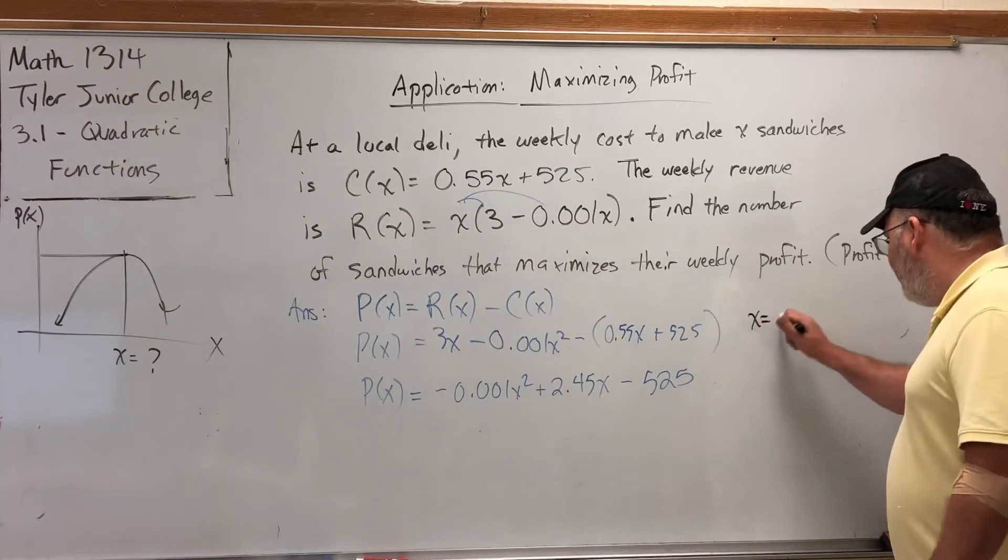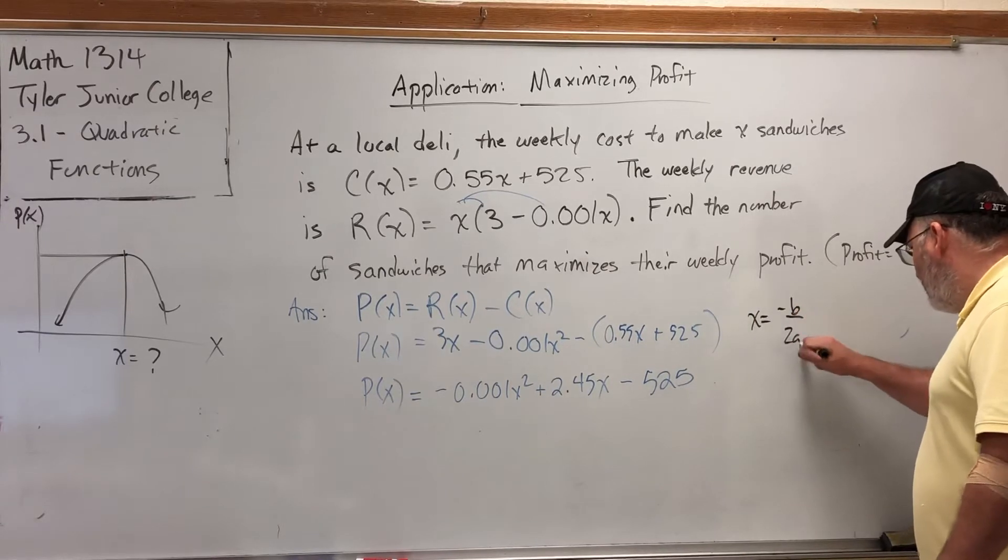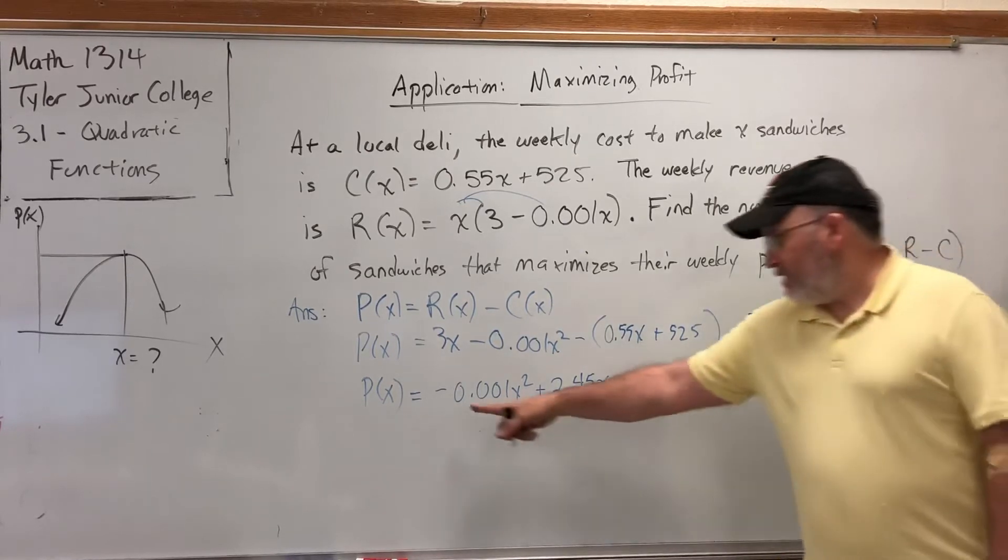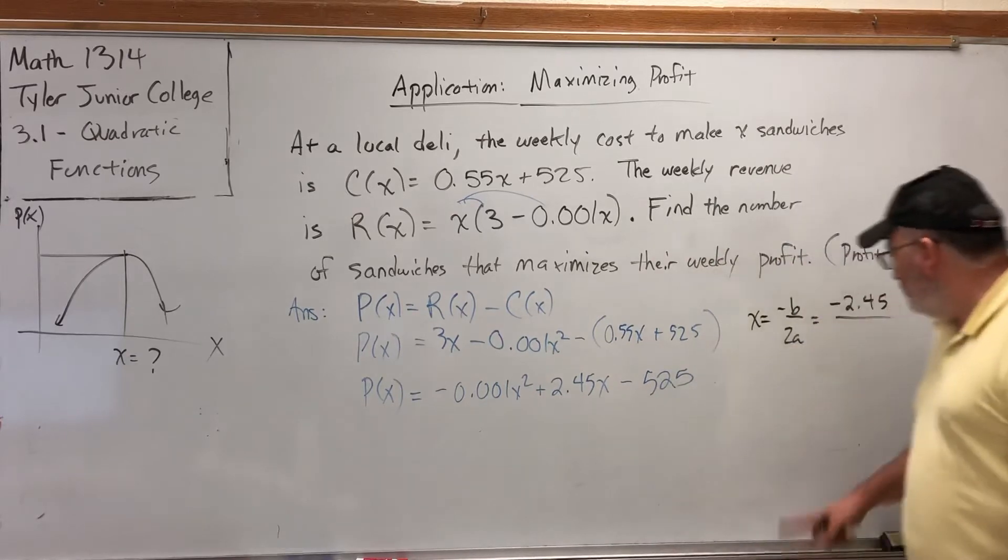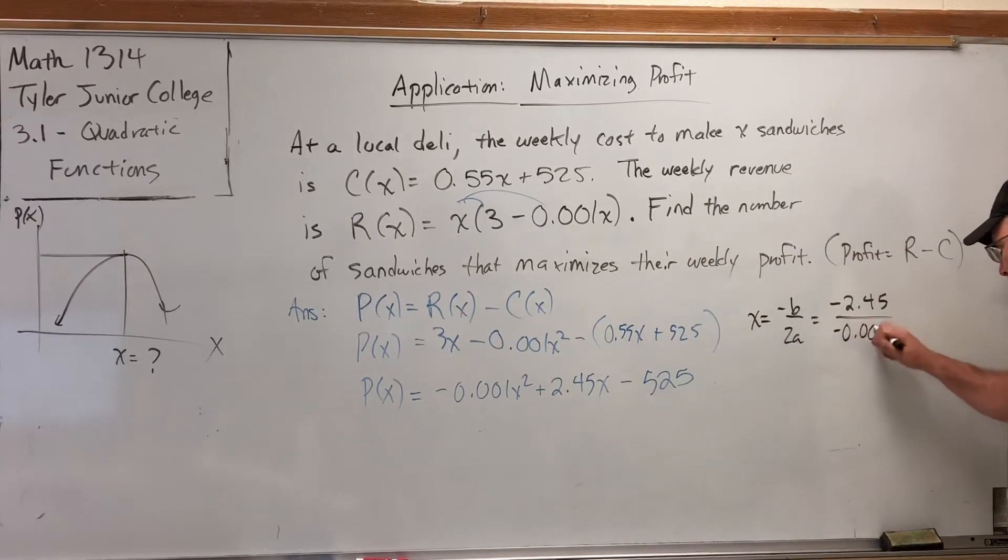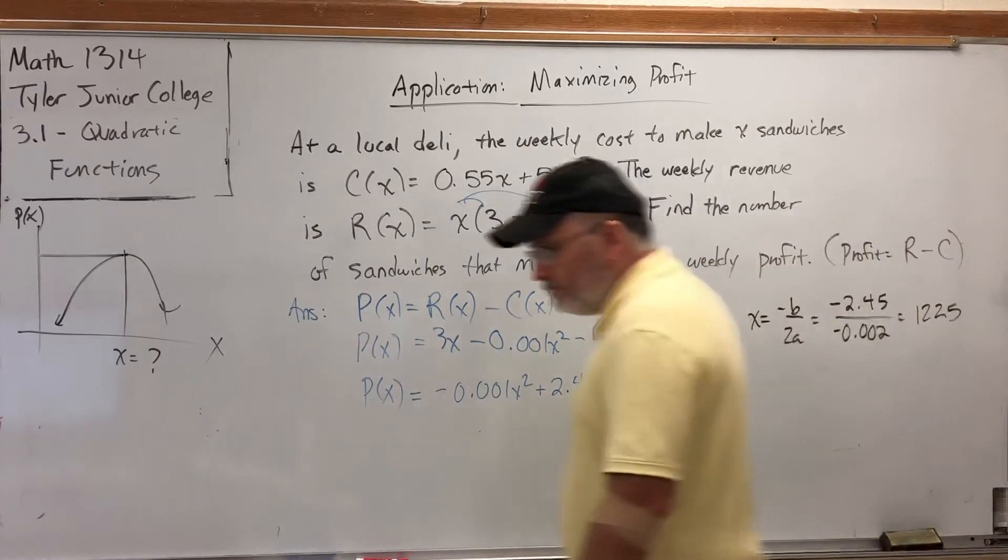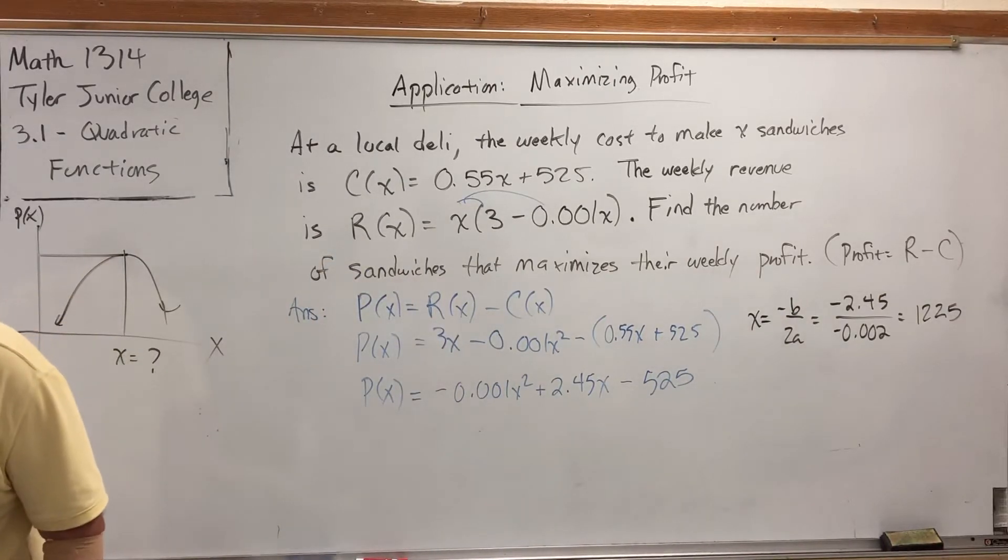So the answer is X equals negative B over 2A. The B in this problem is 2.45, so negative 2.45. The A in this problem is negative 0.001. So if I double that, I get negative 0.002. And if I do the math, I should get 1,225. That's not right. Yeah, it is. Let me double check. Yes, 1,225 sandwiches.